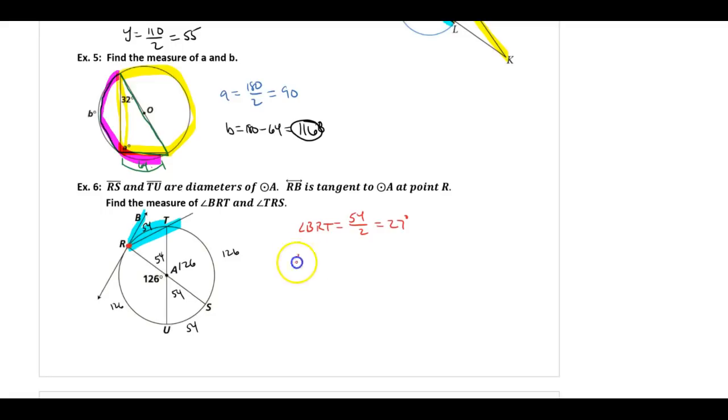For angle TRS, that's this angle here. If I trace that down, it intercepts this 126 degree arc. To find an inscribed angle, I divide the arc by 2, so that is 63 degrees.